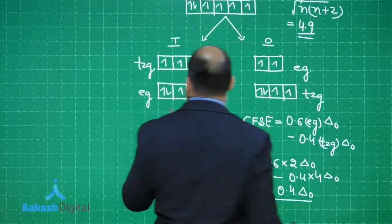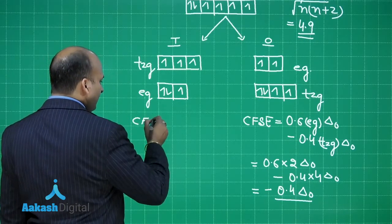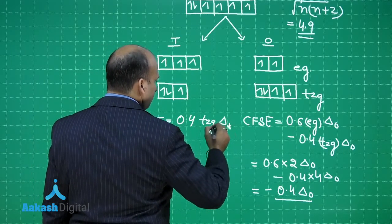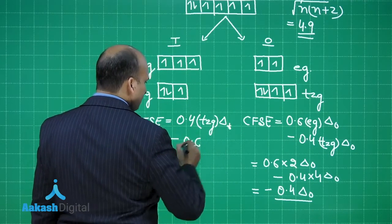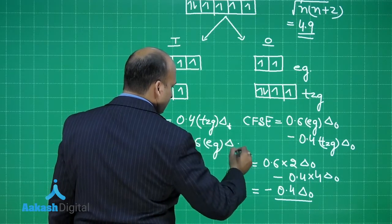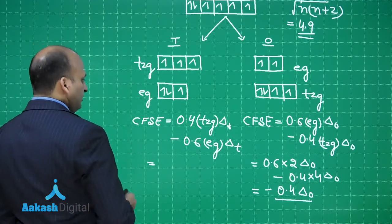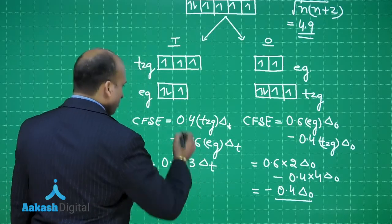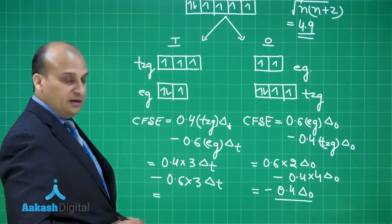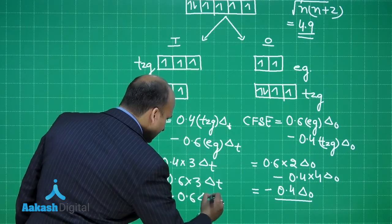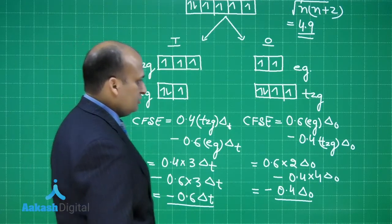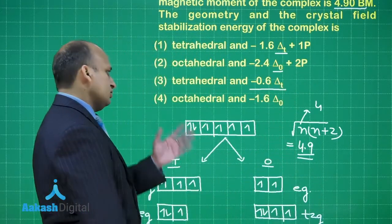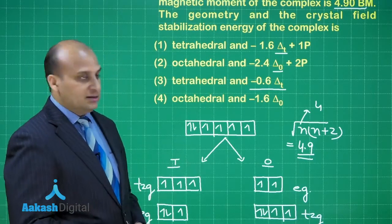We have to solve the problem for the tetrahedral CFSE also. So over here CFSE will be given by 0.4 T2G delta T minus 0.6 EG delta T. How many electrons do you see in T2G? 3. So it should be 0.4 into 3 delta T minus 0.6 delta T. Here also there are 3 electrons delta T. So this is 1.2 minus 1.8, which means minus 0.6 delta T. Dear friends, minus 0.6 delta T. Let us see whether we have it in any of the choices. Yes, here we have it minus 0.6 delta T. So the right answer is tetrahedral crystal and minus 0.6 delta T that is choice number 3.